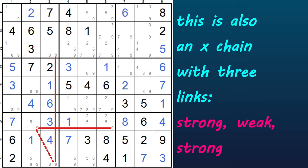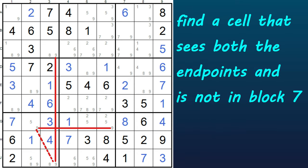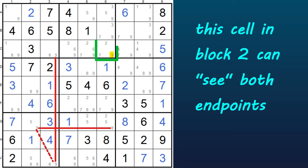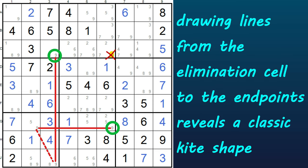We have a chain with three links: strong, weak, strong. Just look at the endpoints and find the cell that sees both. It's this cell in block 2. This cell sees both endpoints, so the 9 can be eliminated from this cell. Let's draw a line from that cell to the two endpoints, and now you can see the classic two-string kite shape.